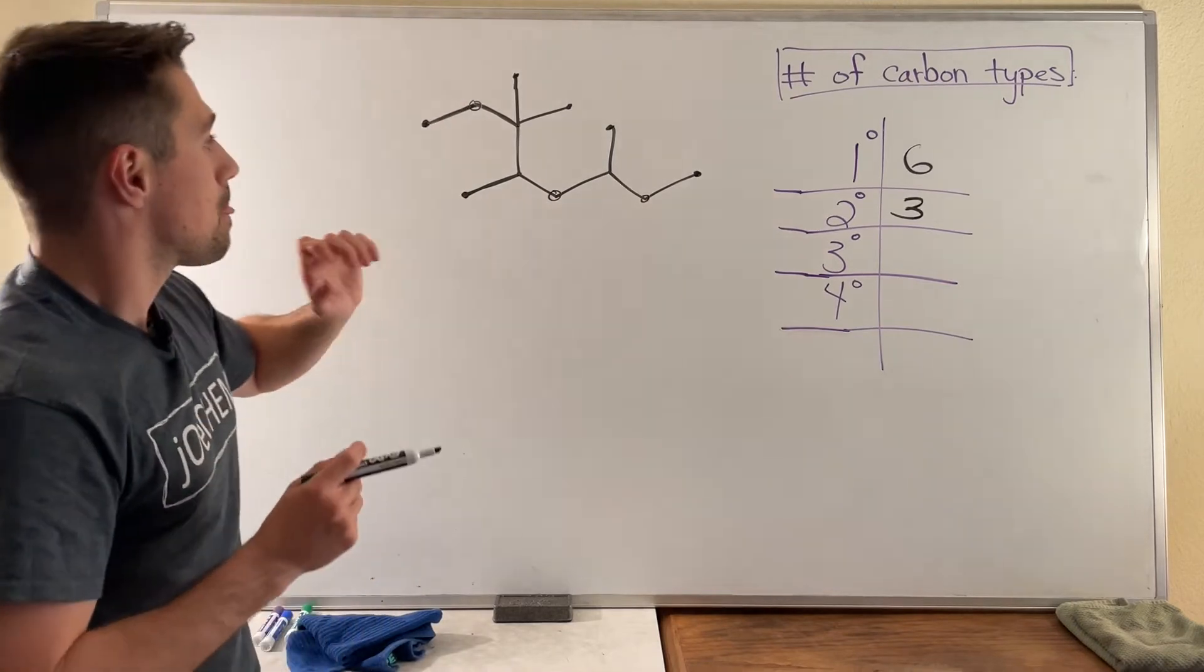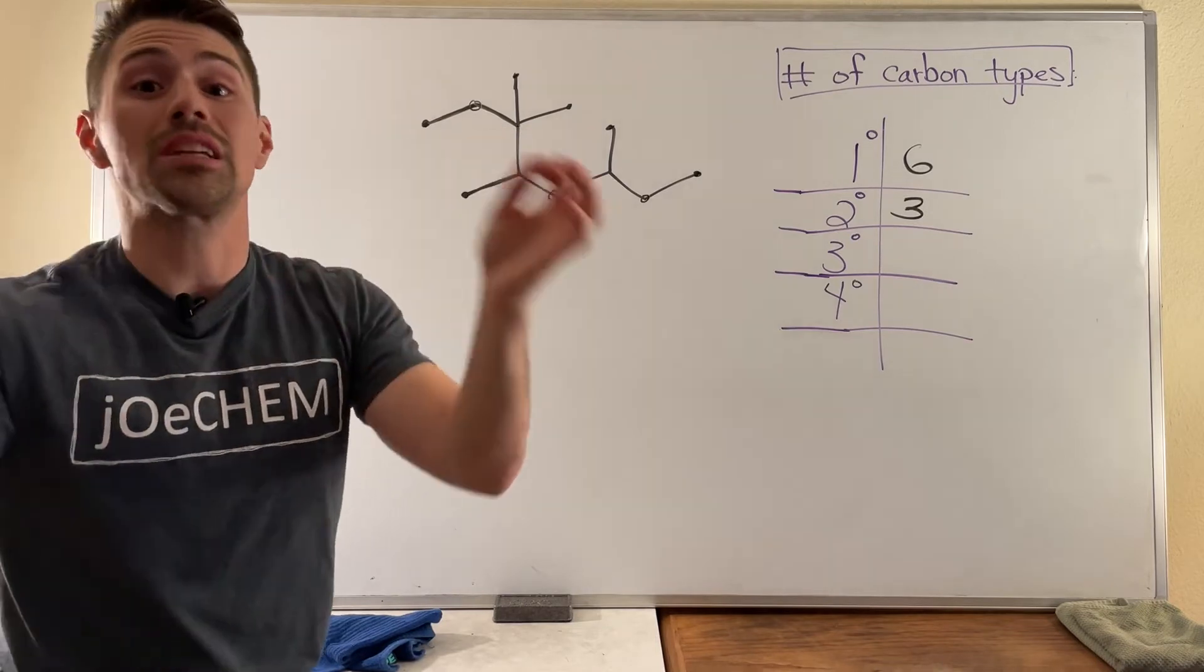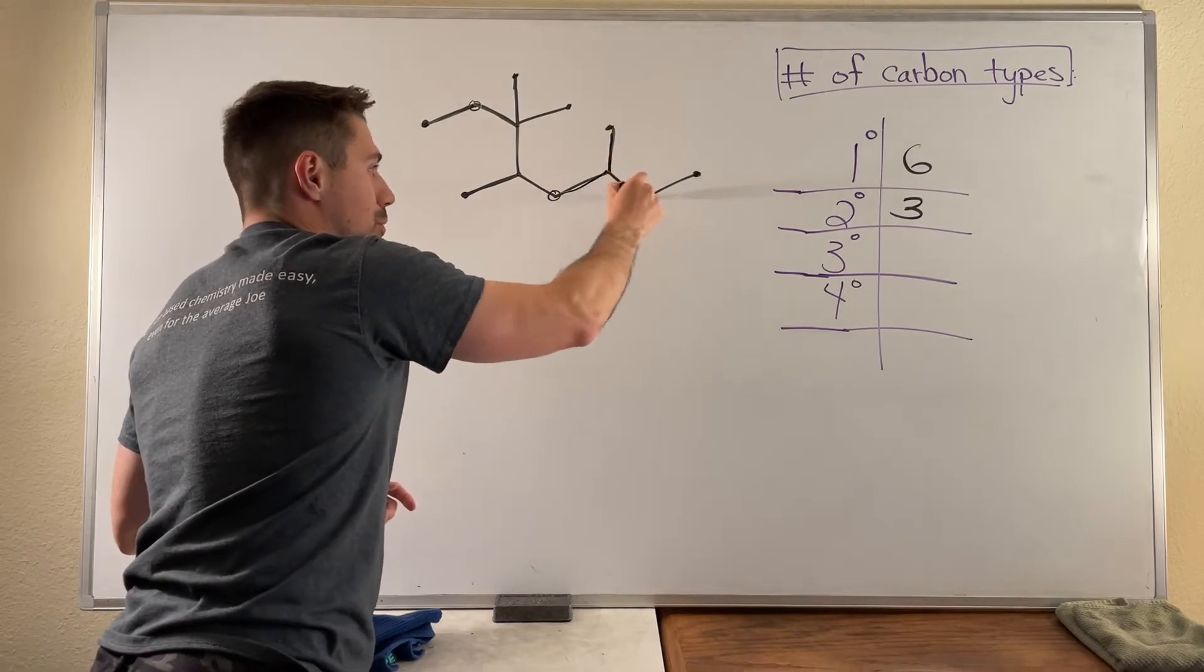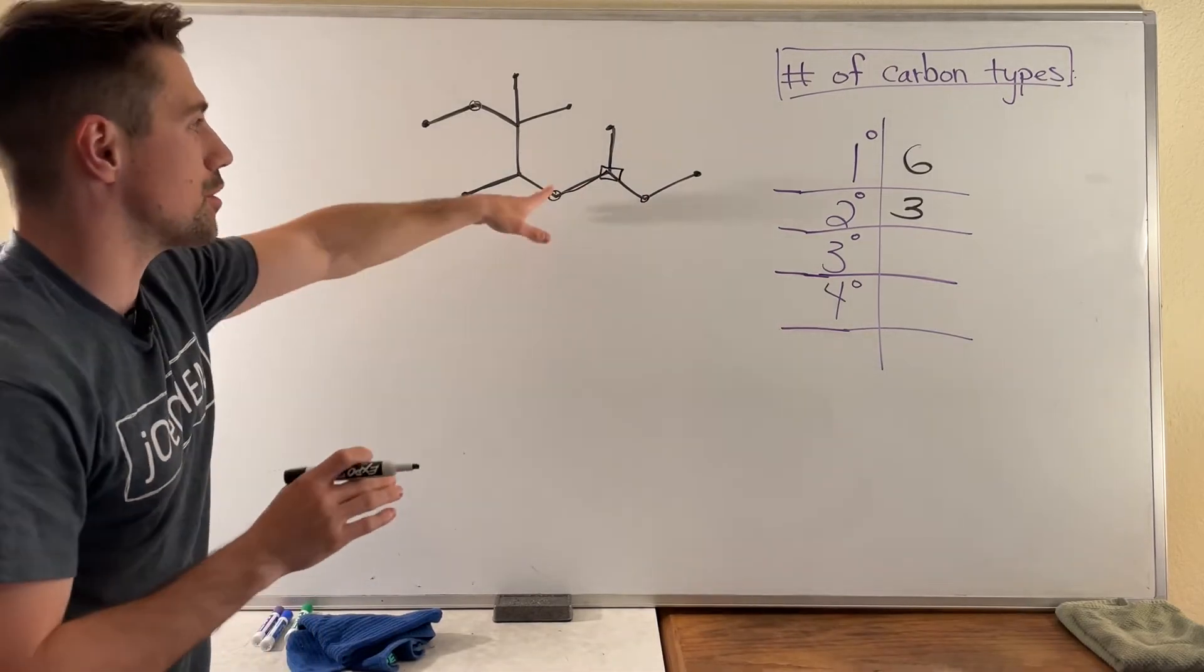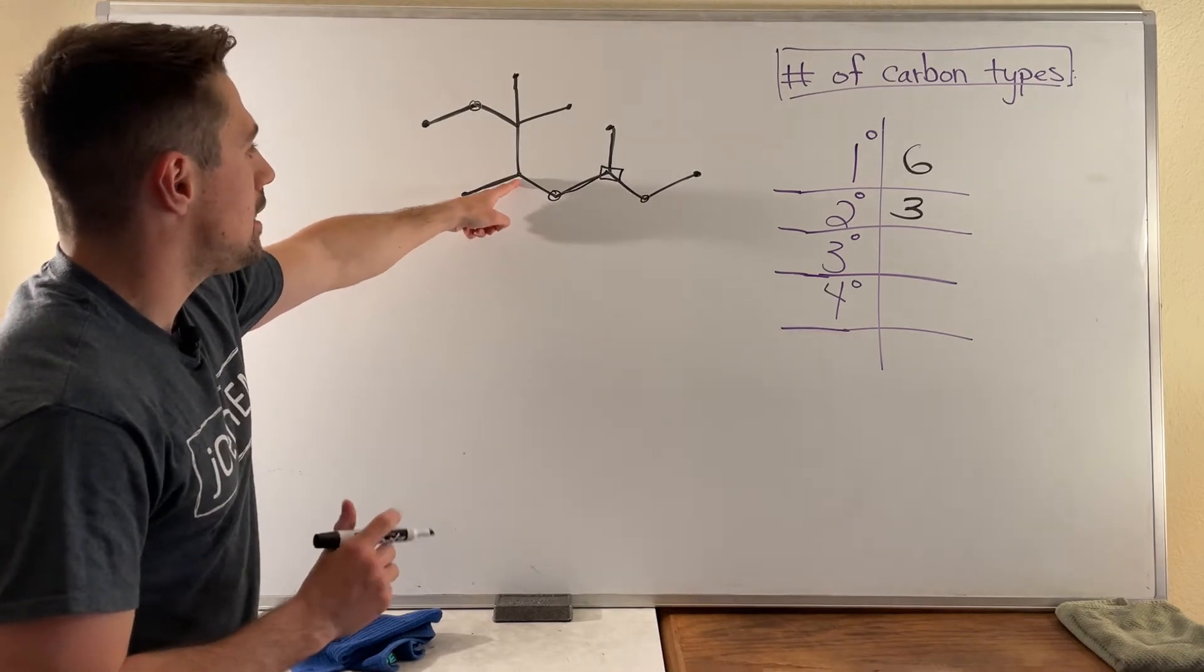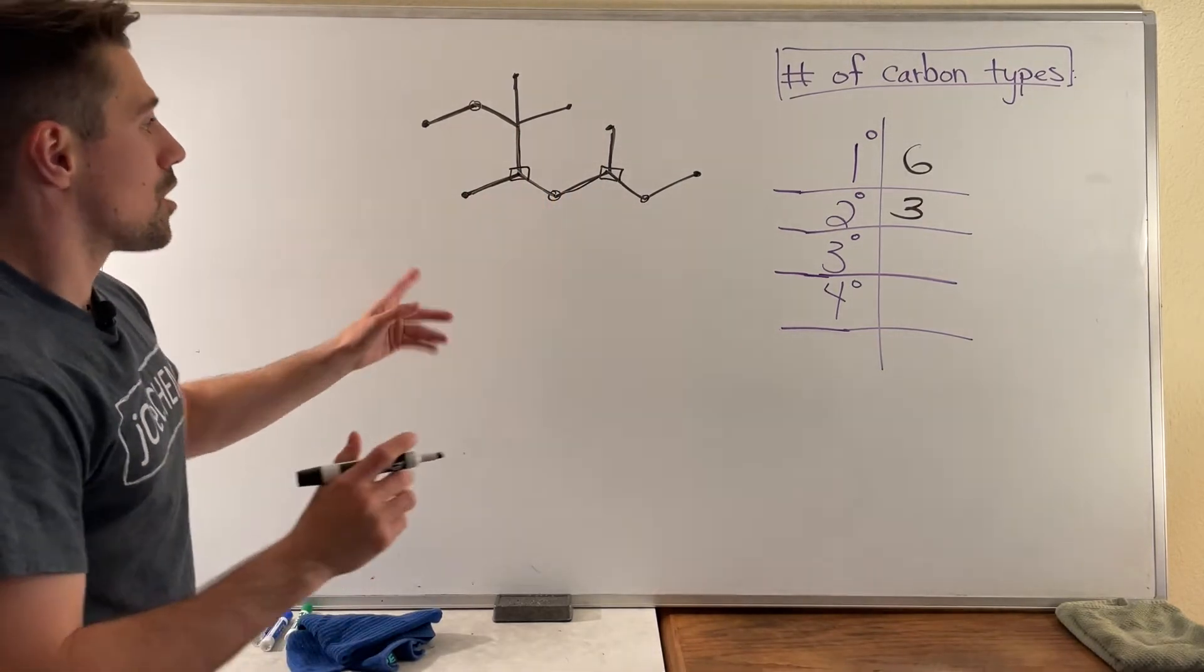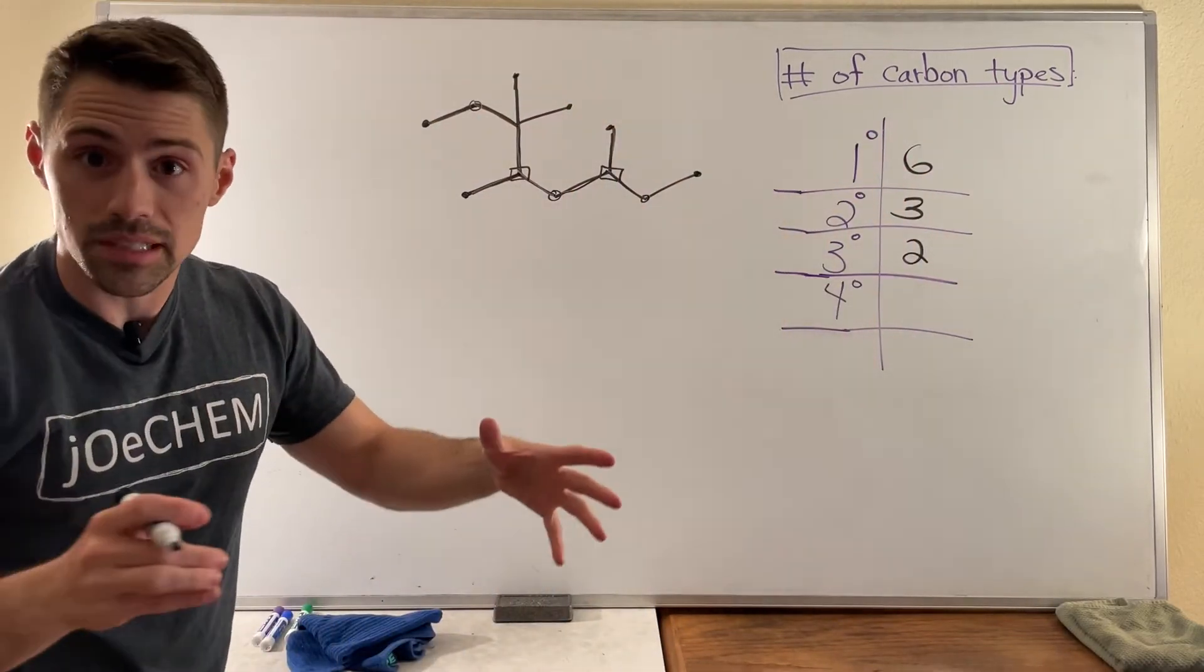Tertiary carbons. If we scan the structure we're looking for carbons that are attached to three other carbons. So if we take a look at this carbon right here, it is attached to one, two, three other carbons. So I'm going to put a little box around that carbon. I'm using different symbols to label them. And if we take a look at this carbon right here, it is also attached to one, two, three other carbons. So I'll put a box around there. So that means we have two tertiary carbons in this structure.